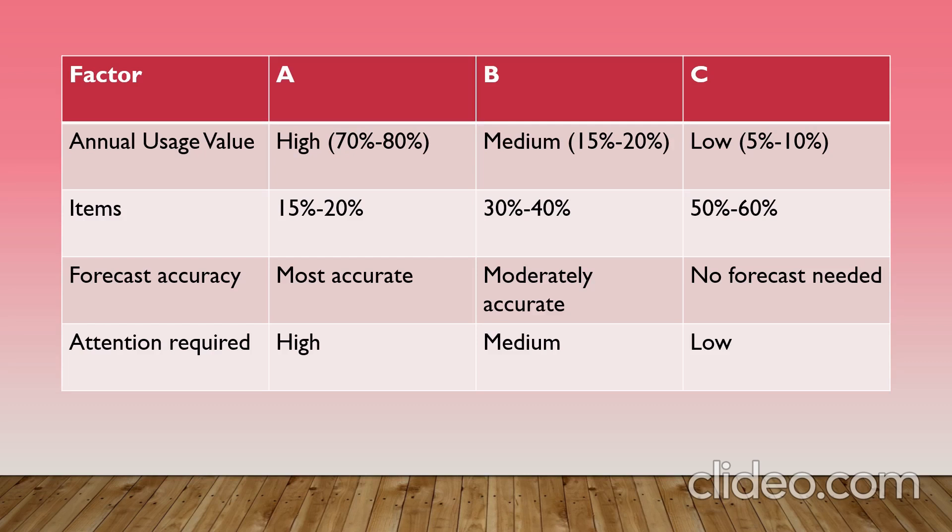Coming to forecast accuracy: A items need a more accurate forecast because they are associated with high inventory cost. B items need a moderately accurate forecast. C items need low accuracy or no forecast at all.